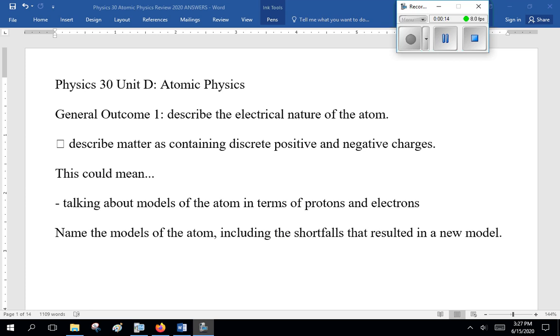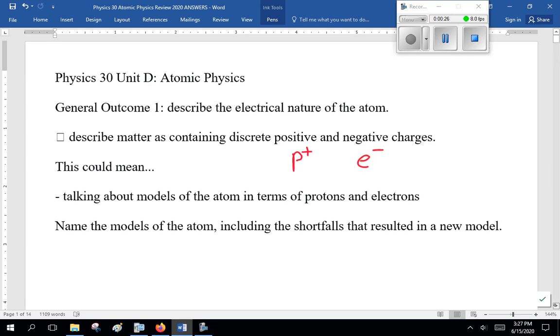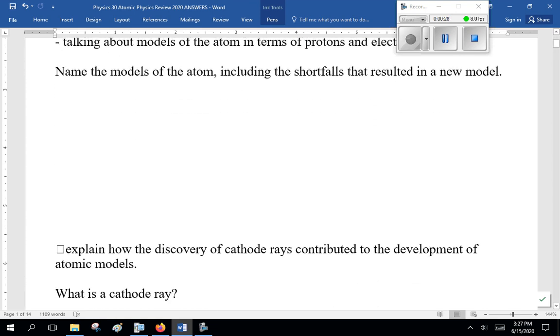Describe matter as containing discrete positive protons and negative electrons. This could mean talking about models of the atom in terms of protons and electrons. Democritus was the first guy. He came up with the idea of an atom.